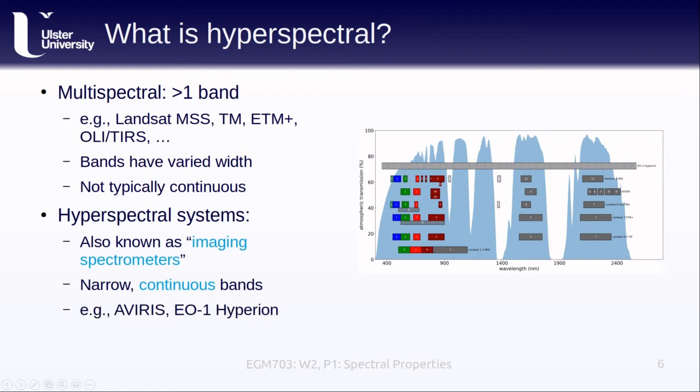Some examples of hyperspectral sensors that we'll learn a bit more about are the airborne visible and infrared imaging spectrometer, or AVIRIS, or the Hyperion sensor carried by the Earth Observing-1 satellite. On the plot here, you can see the 220 bands of this sensor, which range from 357 nanometers all the way up to 2,576 nanometers in about 10 nanometer increments.